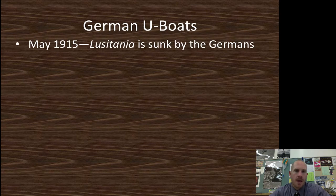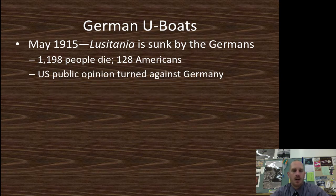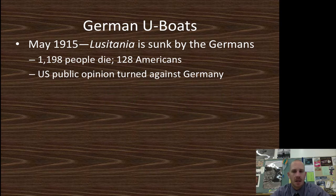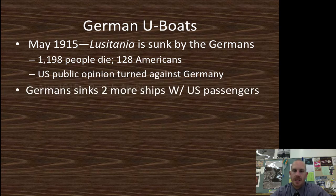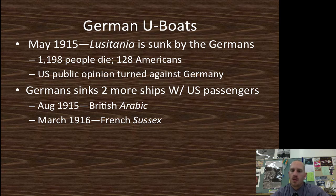The German U-boats — in May 1915, the Lusitania is sunk by the Germans engaging in unrestricted submarine warfare. Close to 1,200 people died, including almost 130 Americans. U.S. public opinion began to change against the Germans at this point, though there was conflict since many Americans were of German descent. The Germans then sank two more ships with U.S. passengers: the British Arabic in August 1915 and the French Sussex in March 1916, strengthening American opposition to Germany.